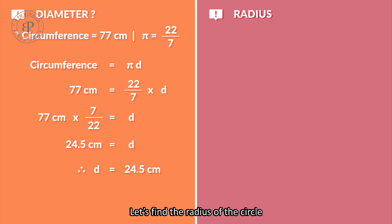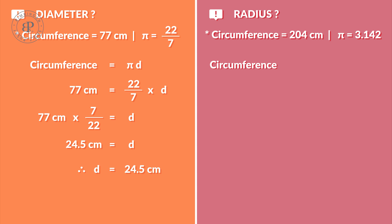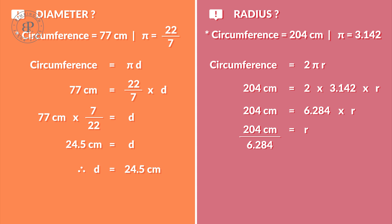Let's find the radius of the circle. If the circle has a circumference of 204 cm, using pi as 3.142: circumference equals 2 pi r, so 204 equals 2 times 3.142 times r. Therefore, 204 equals 6.284 times r, and 204 over 6.284 equals r, giving r equals 32.46 cm.